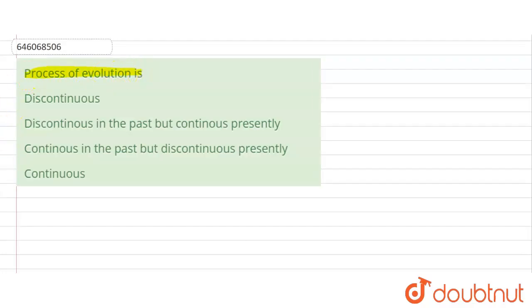The process of evolution is... So the process of evolution is a continuous process. This is a continuous process.